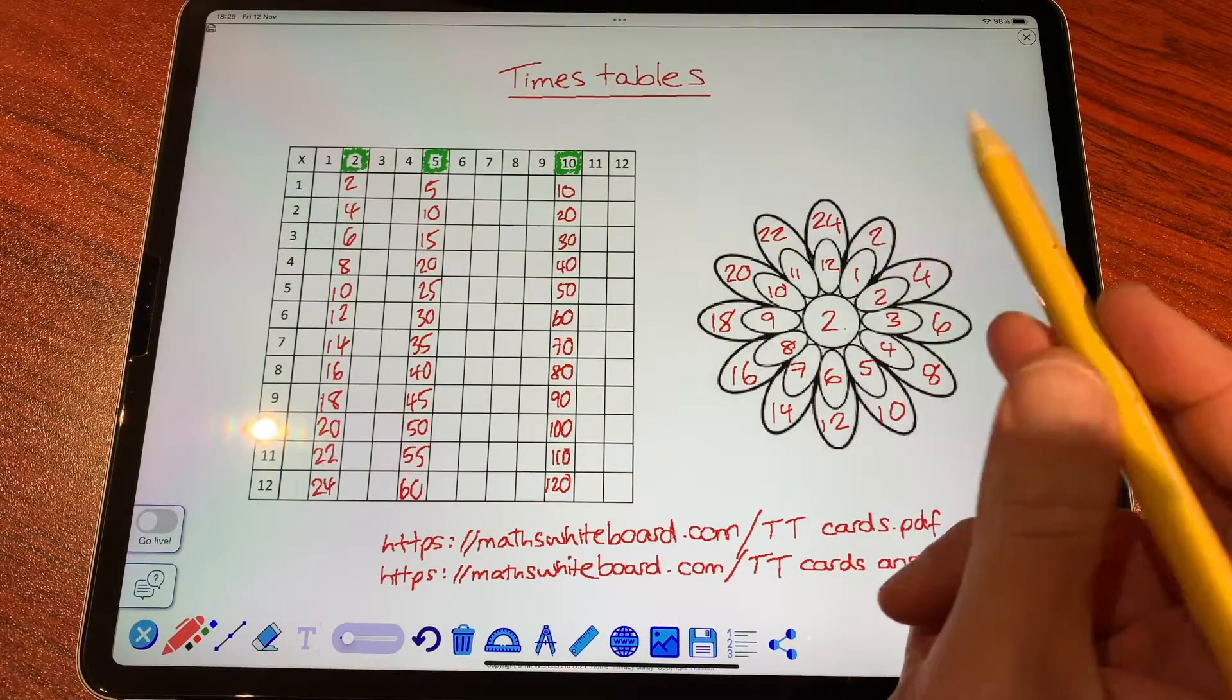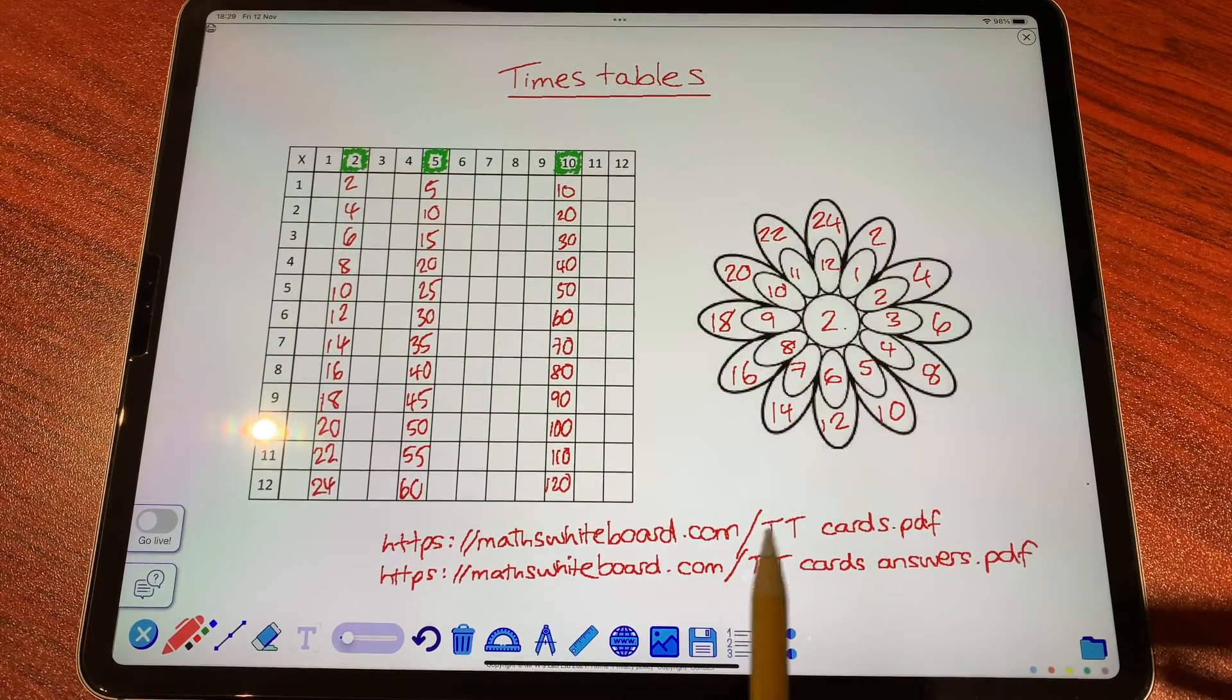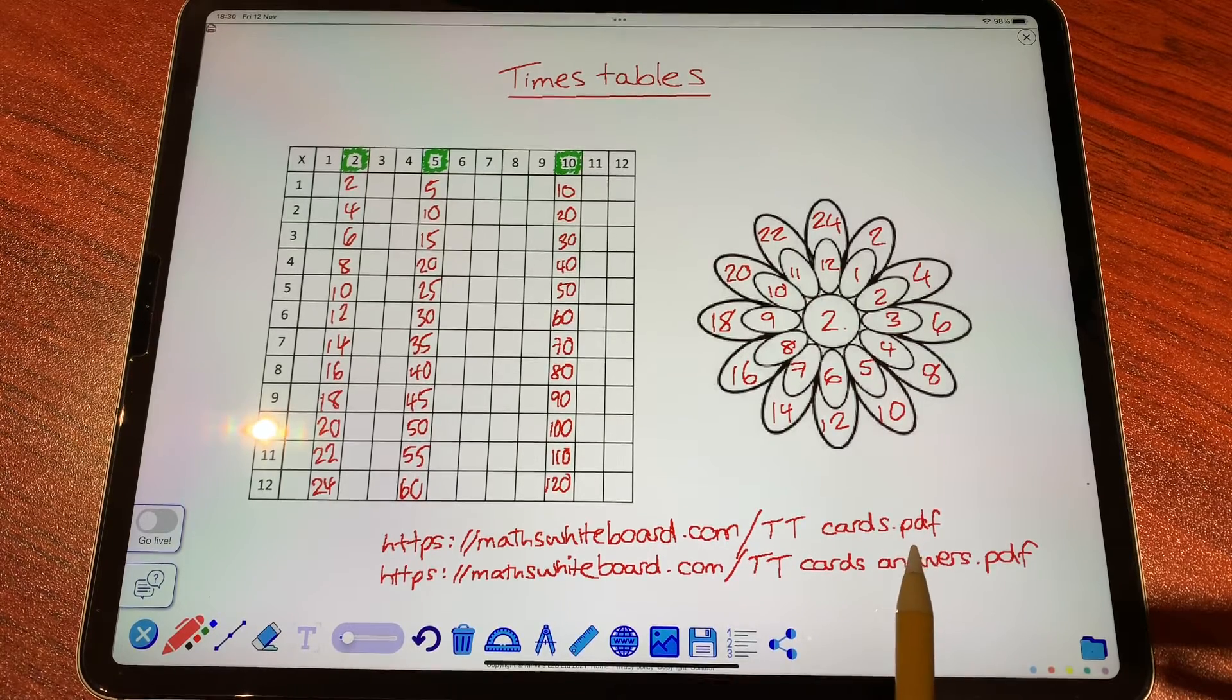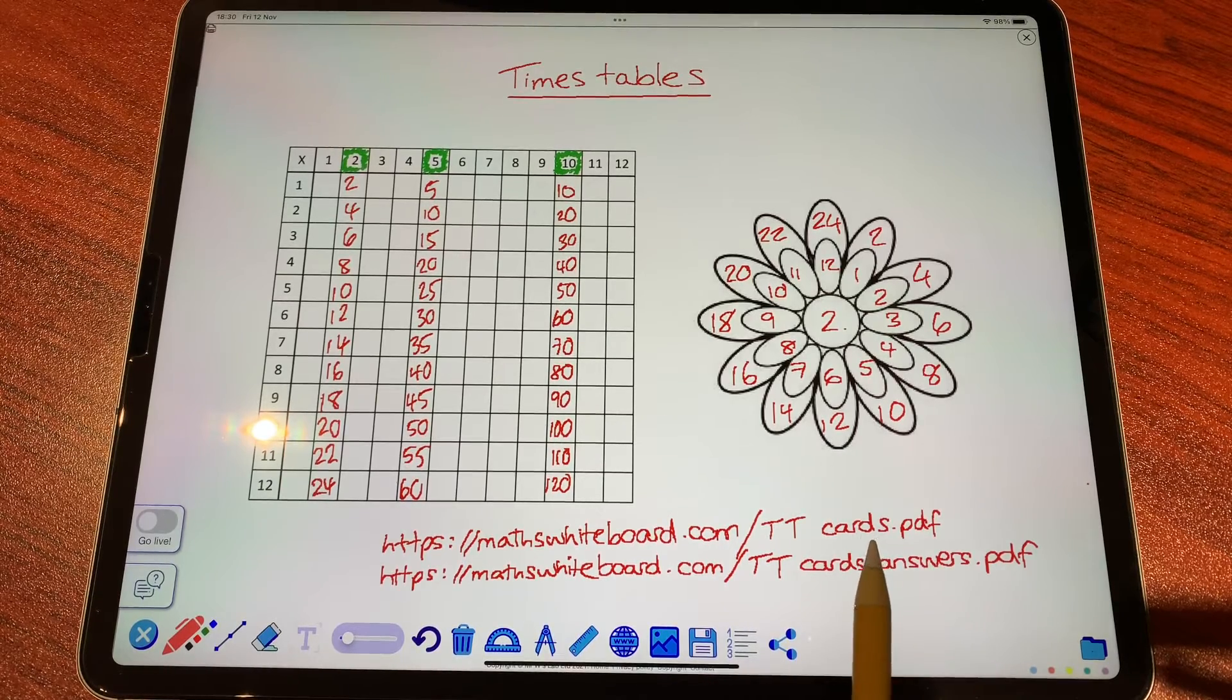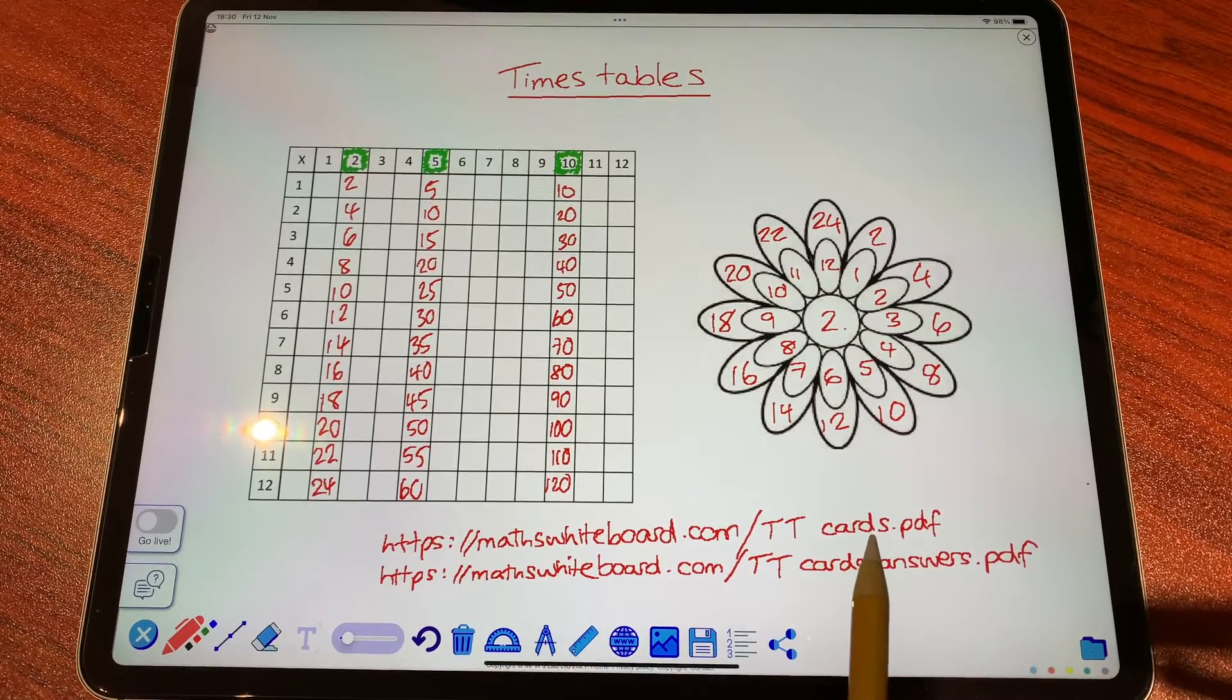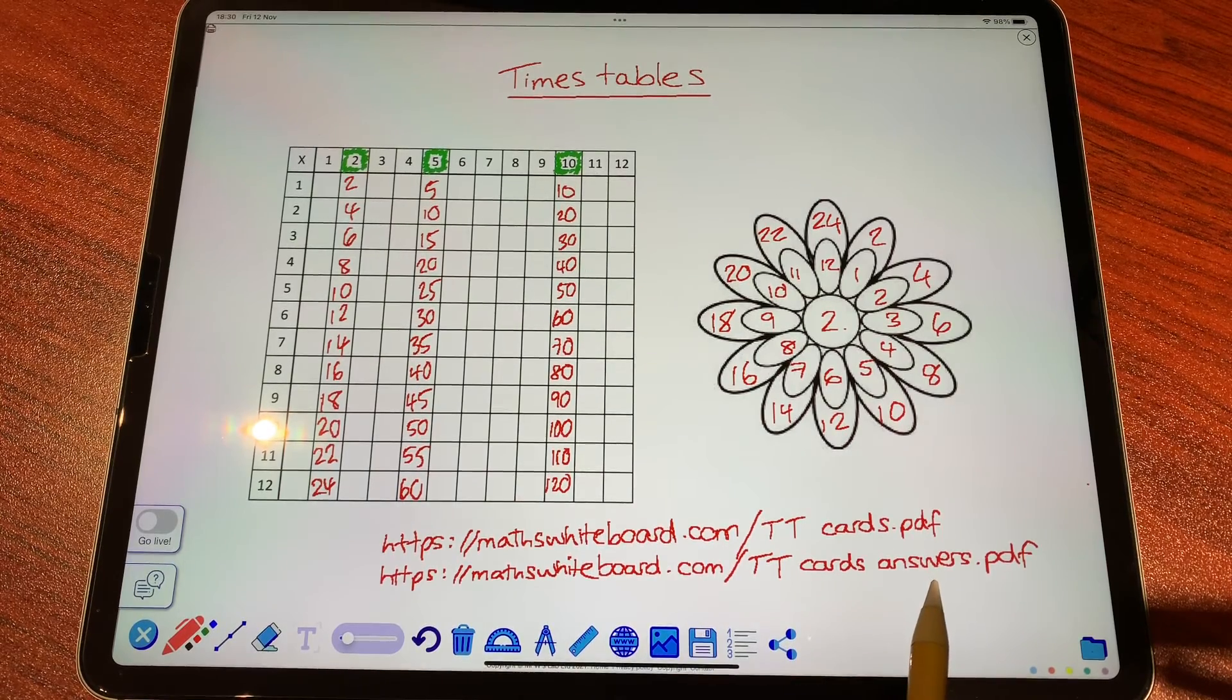Here I've now finished my multiplication grid. Now head to mathswhiteboard.com/TT cards.pdf and you'll be able to download a set of free flash cards. The flash cards are great because it will enable you to rehearse all of your times tables with ease. Print out the first document and on the back of each of those cards, then print out the answers as an easy way of checking.